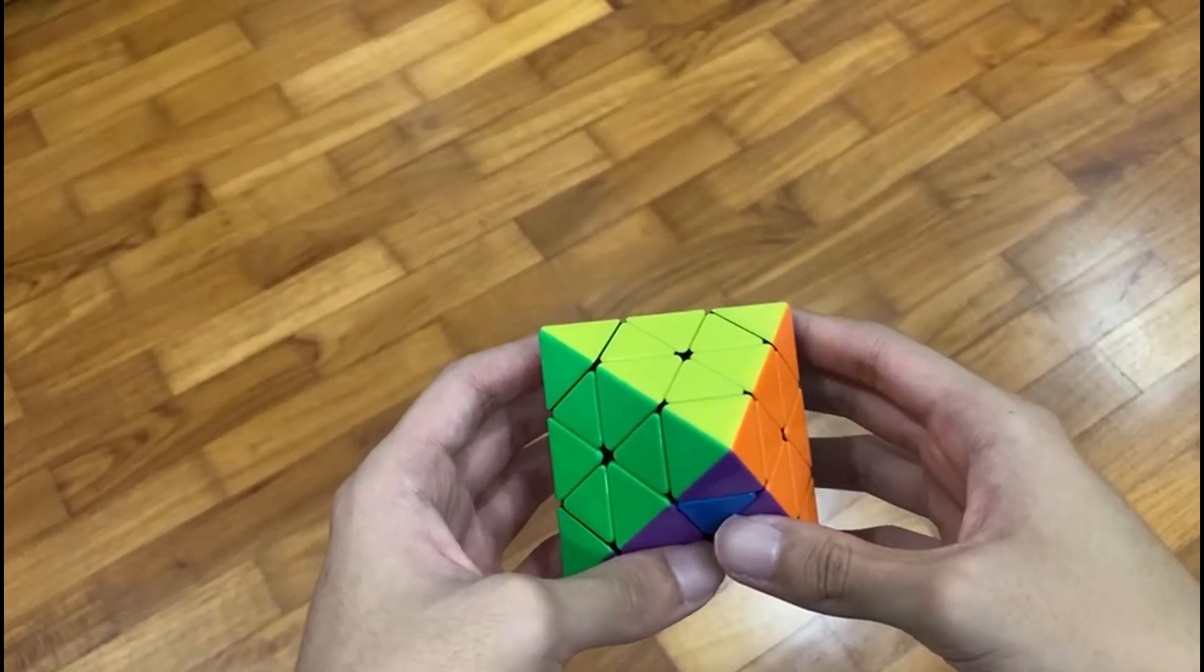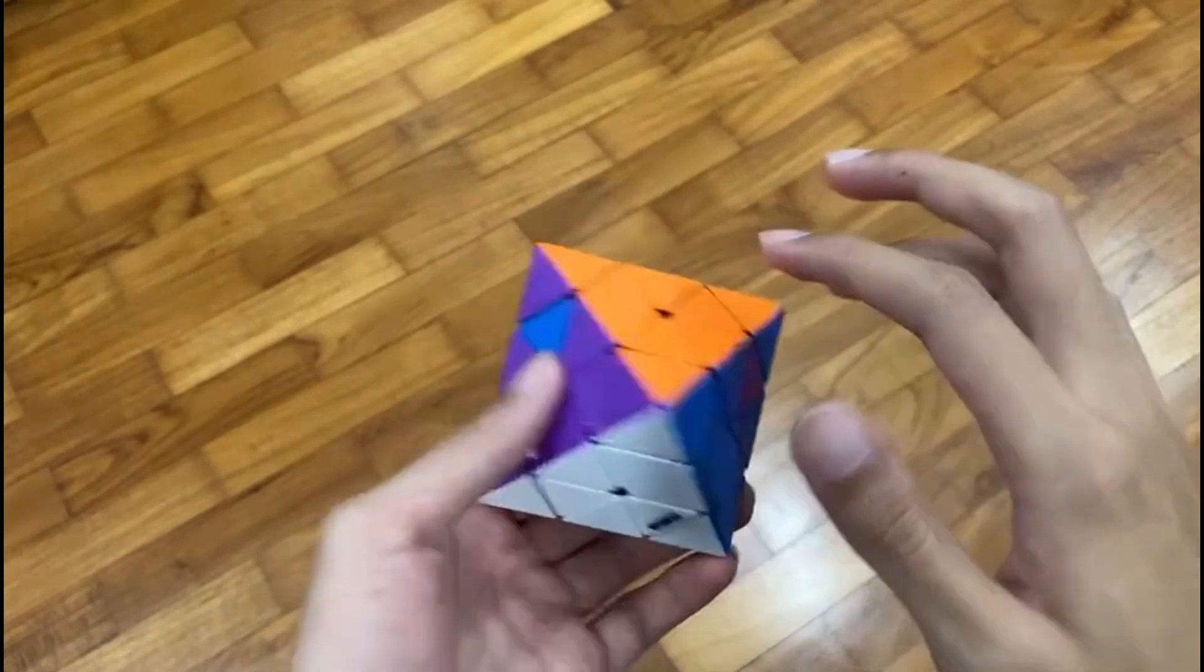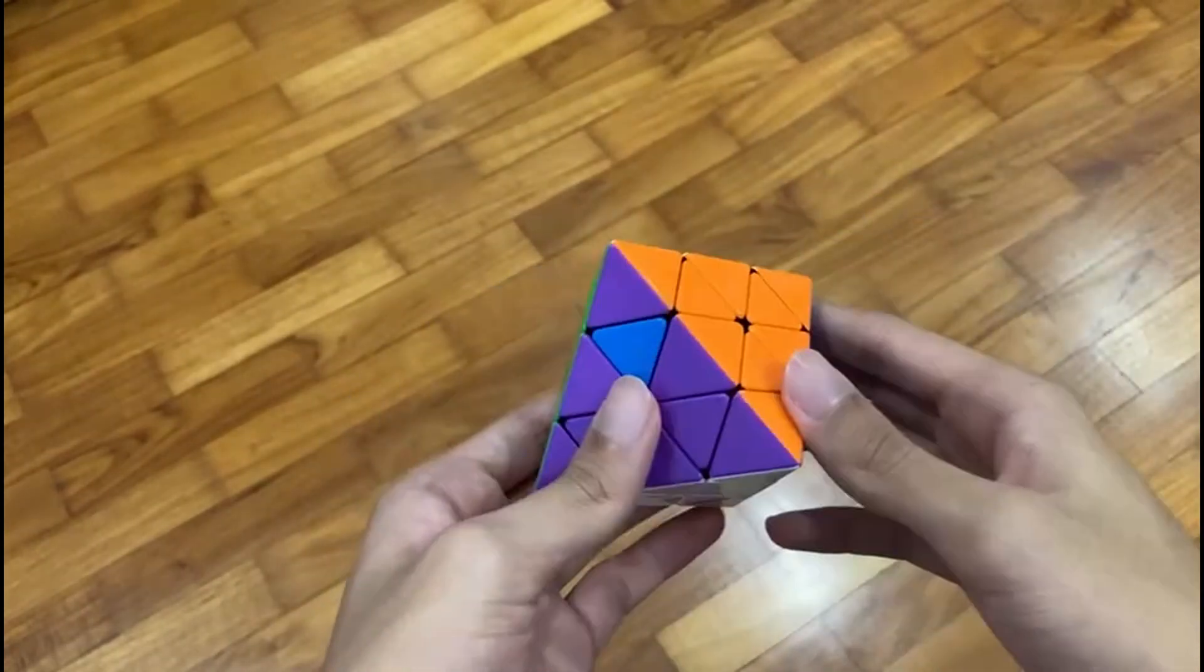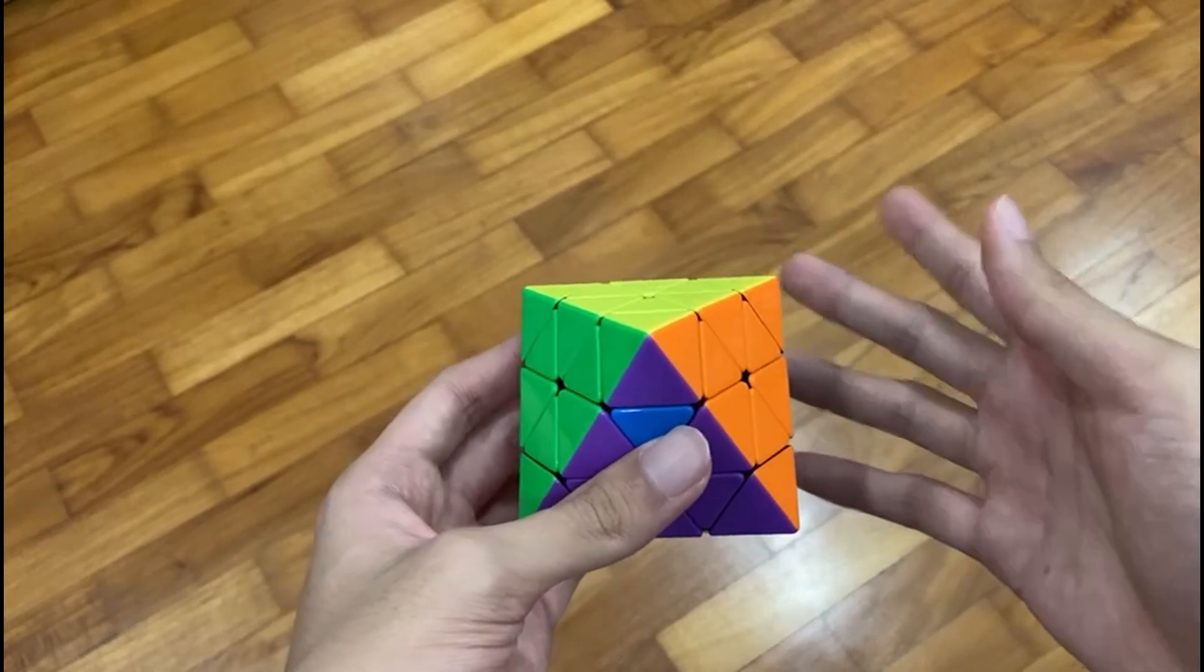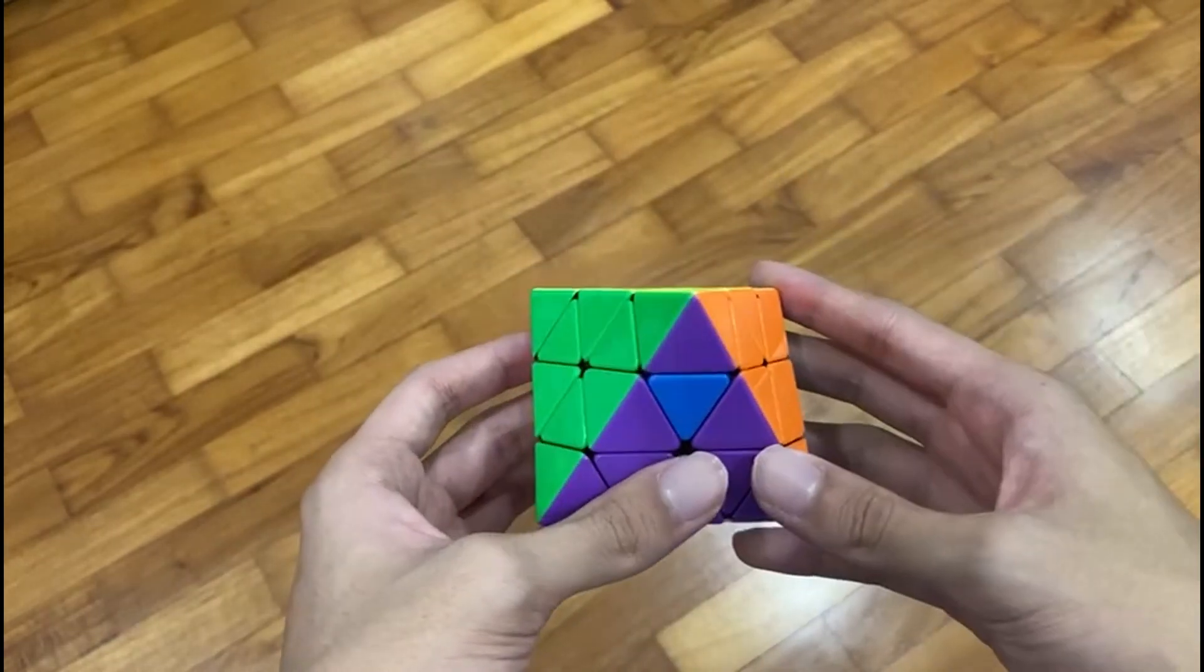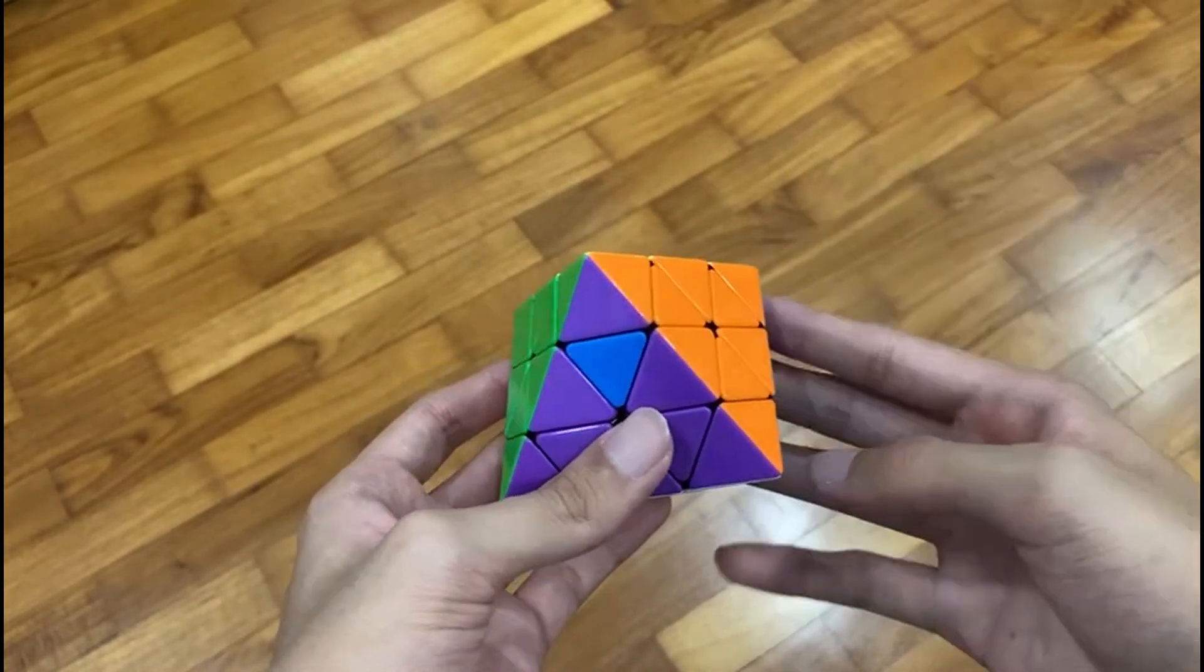If you've done the first two steps correctly, you should end up with a solved layer and just these few centers that have not been permuted yet. If you get lucky and if you just skip this step, well, you're done solving the FTO. But other than that, there's three different cases.